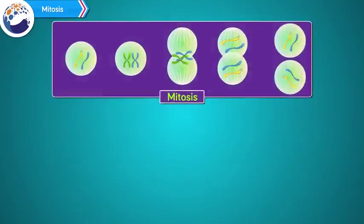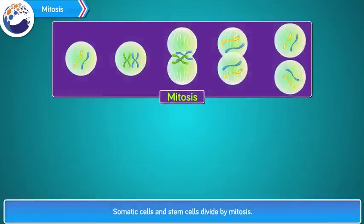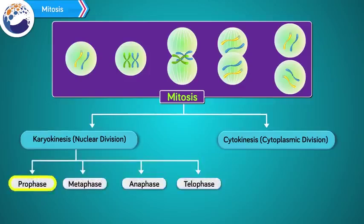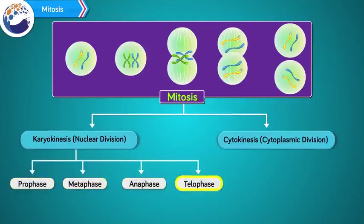Let us study mitosis. Somatic cells and stem cells divide by mitosis. Mitosis is completed through two main steps: first, karyokinesis or nuclear division occurs, and then cytokinesis or cytoplasmic division. Karyokinesis comprises four steps: prophase, metaphase, anaphase, and telophase.